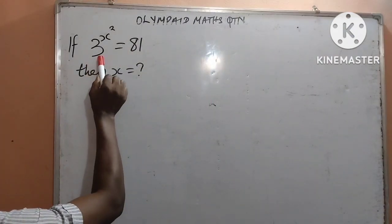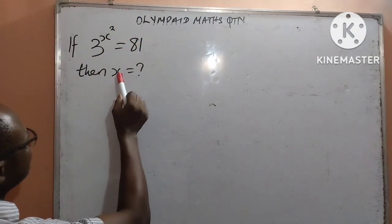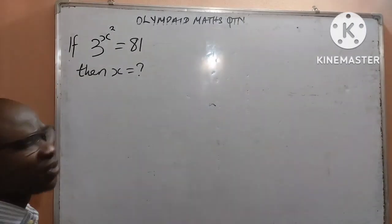We are given that 3 to the power of x to the power of 2 is equal to 81. We are expected to find the value of x. It is a brief one, a simple one.